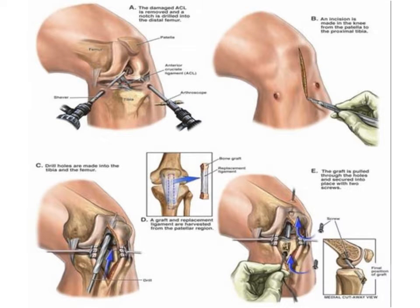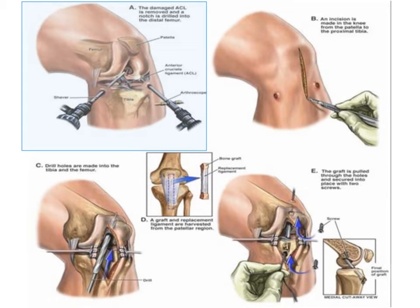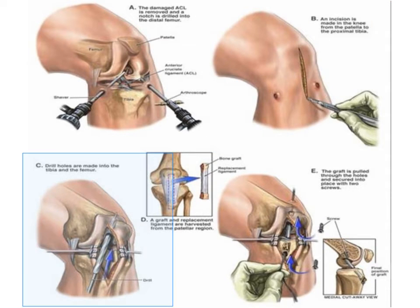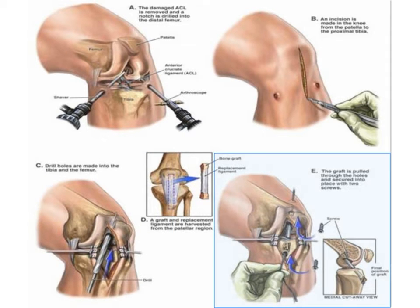Most often this type of surgery is done arthroscopically. An arthroscope is inserted into the cavity to visualize the joint, a vertical incision is made, and the damaged ligament is removed. The surgeon then drills a hole into the posterior part of the femur and anterior part of the tibia, and unites these bones with a new ligament, usually harvested from the patellar ligament.